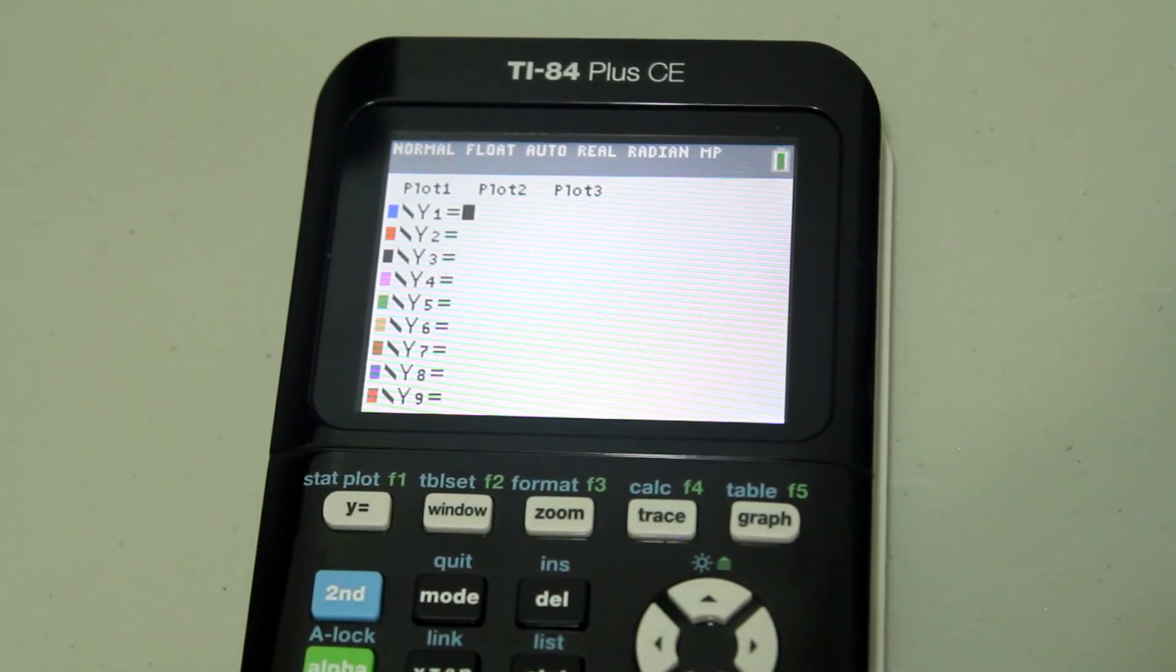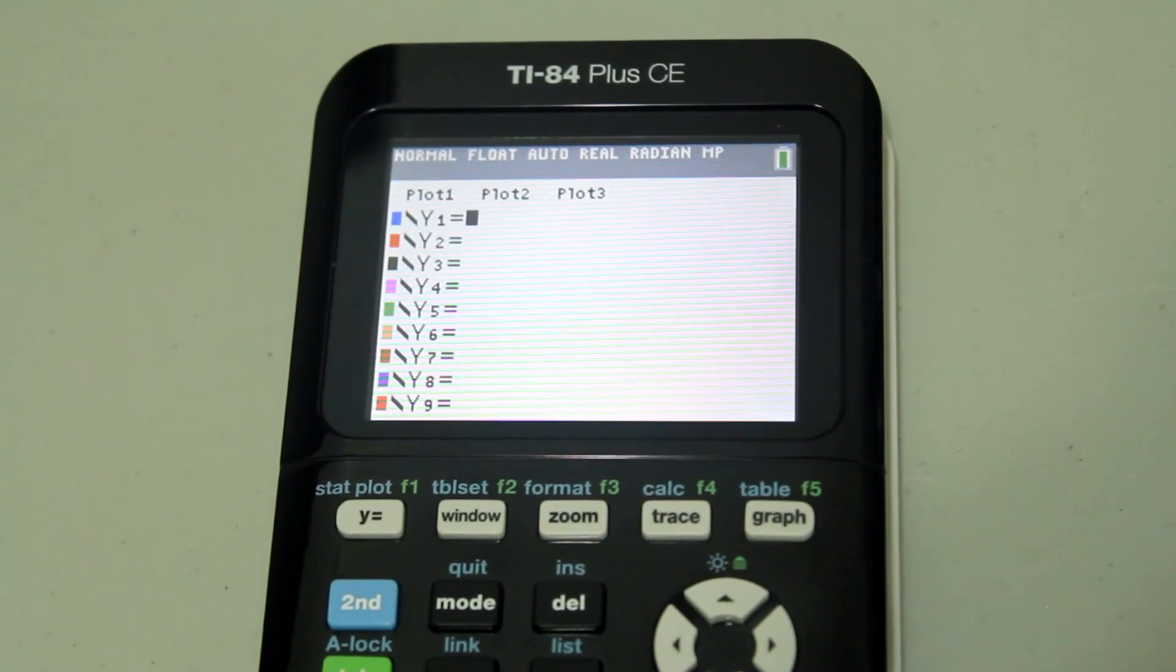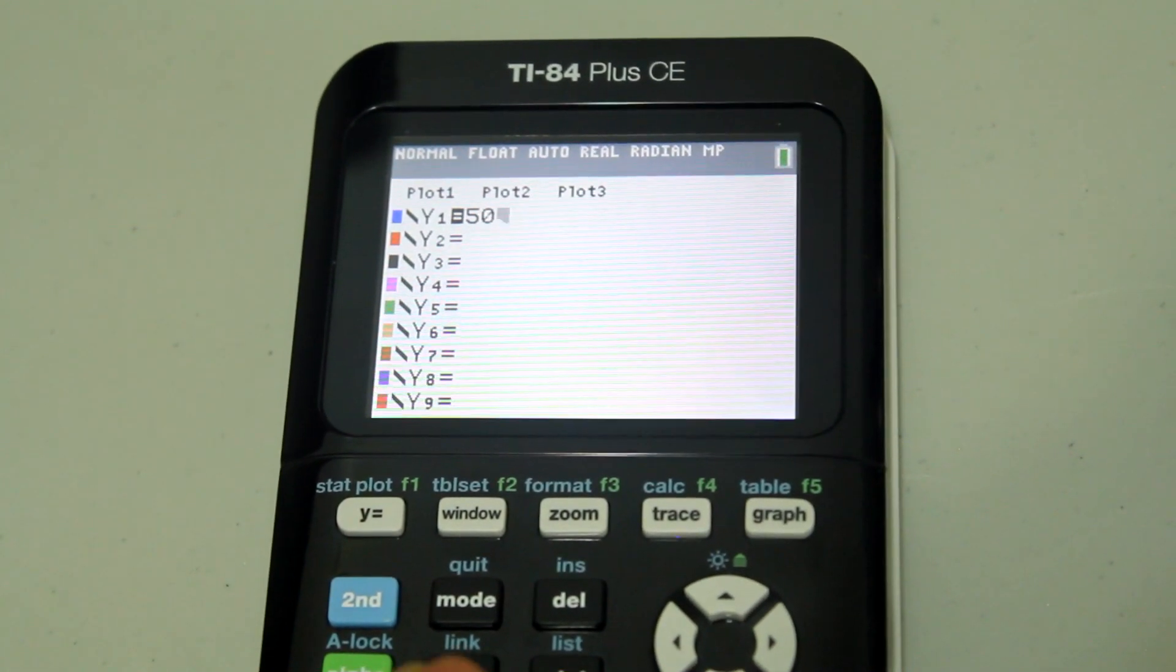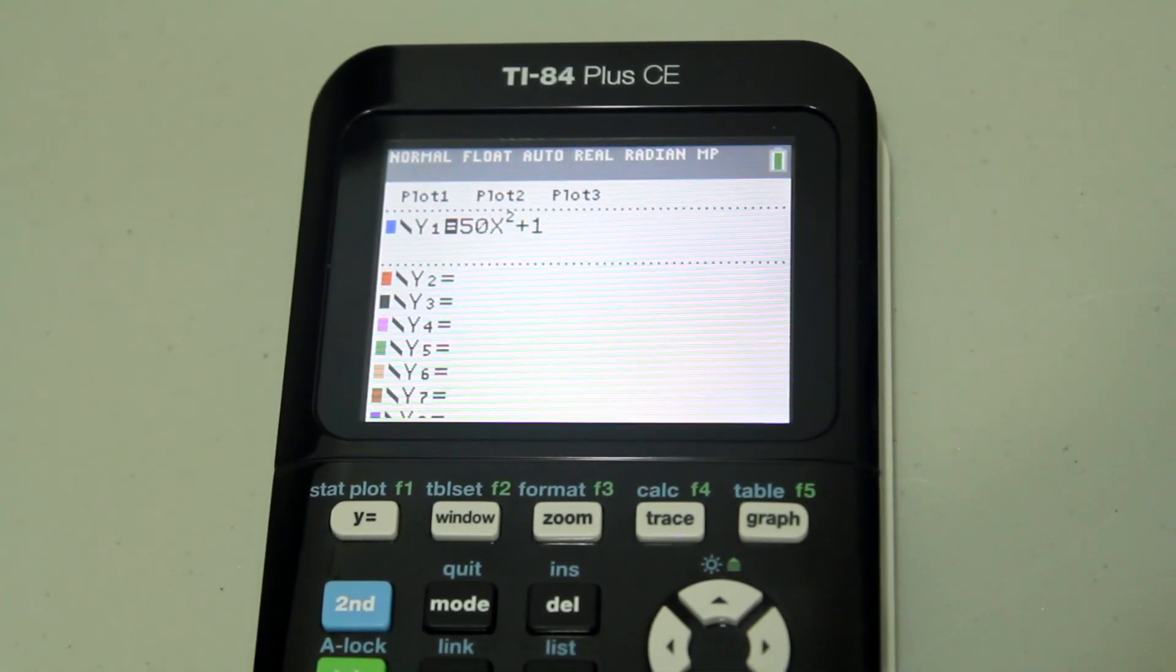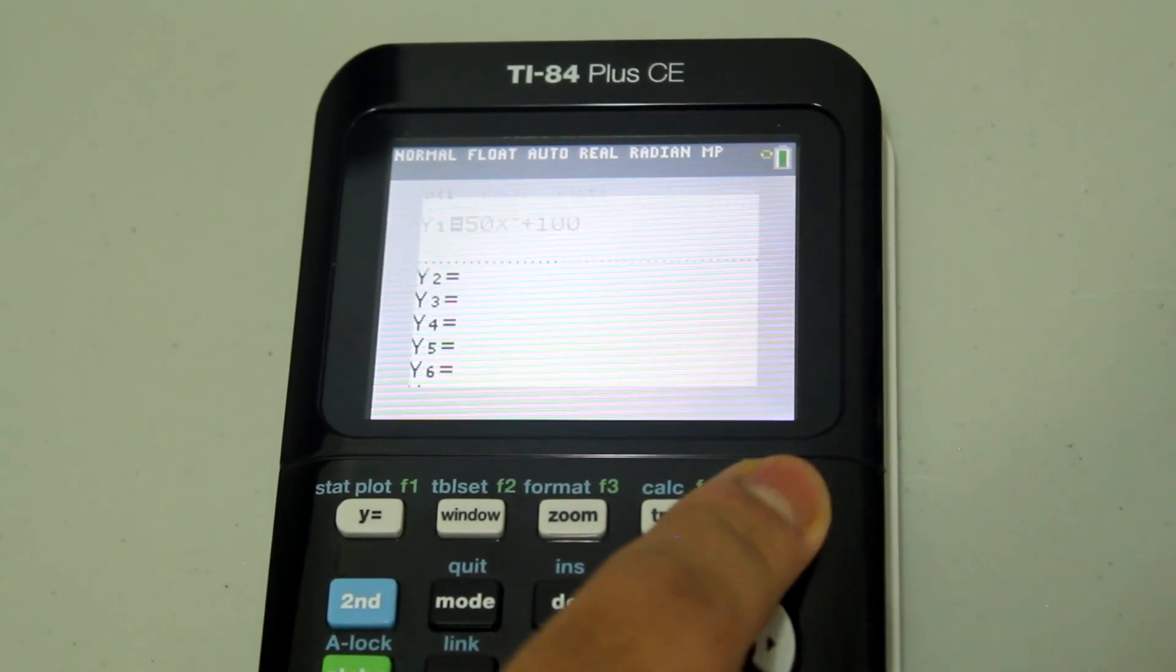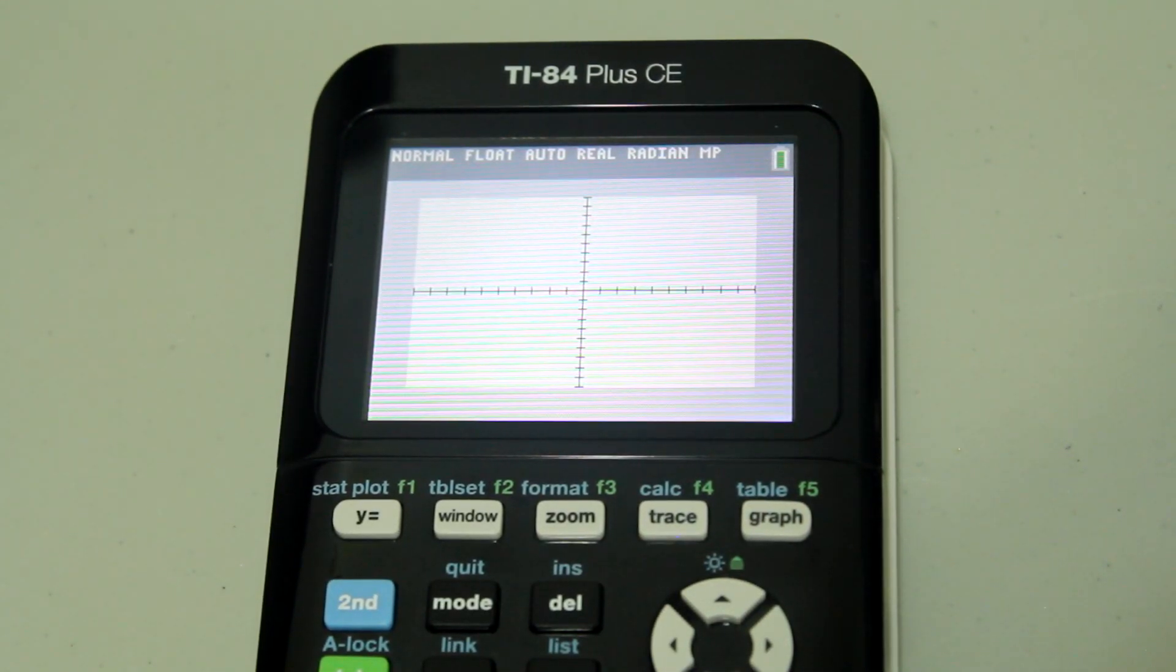Now if I go to y equals and graph something relatively large, let's keep it simple—let's just say 50x squared plus 100. When I graph it, obviously it doesn't show up because the window is too small for the graph.